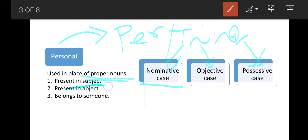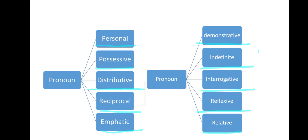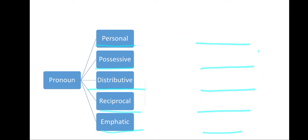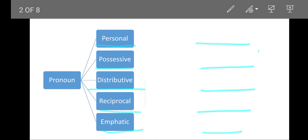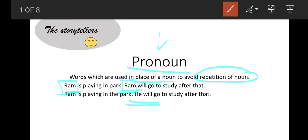These three cases are: nominative case — when the noun is in the subject position. As we have seen in the previous sentence, in 'Ram is playing in the park', Ram was the subject. When Ram was replaced by 'he', it was a nominative case.